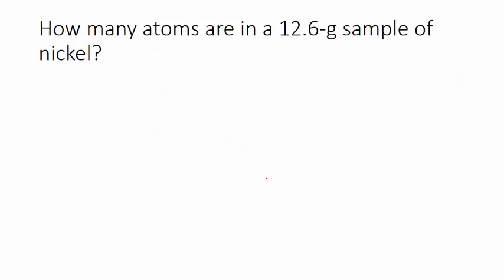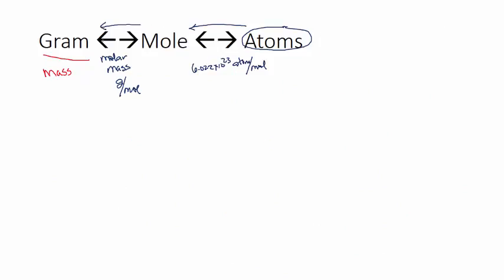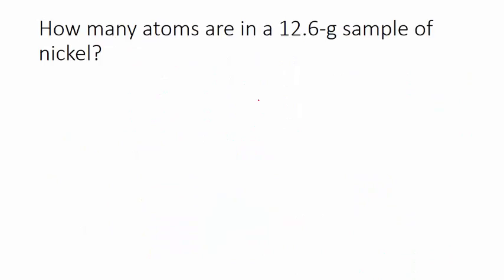Let's go to the next one. How many atoms are in a 12.6 gram sample? So now in this case, we have nickel. We know how many grams we have. Let's back up to that map thing here. We are given the grams. We want to know how many atoms. So we're going to go in this direction. We're going to start with grams. We're going to go to moles. Once we get moles, we're going to go to atoms.